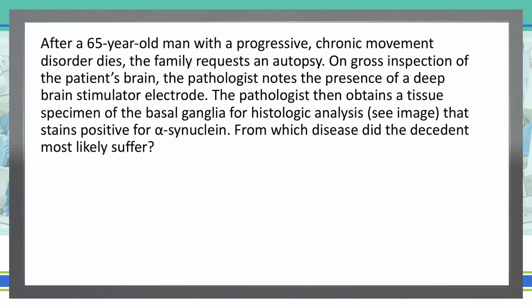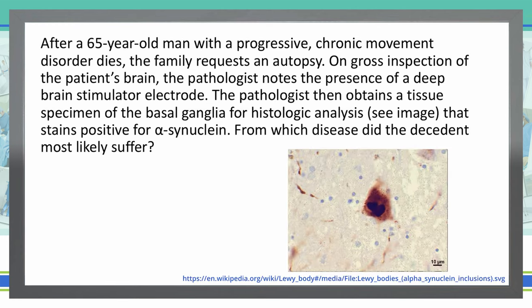Let's take a look at this picture. What you're seeing in the middle is an inclusion body, which is just an aggregation of protein. That should give us good information if you can remember back to your basic pathology.